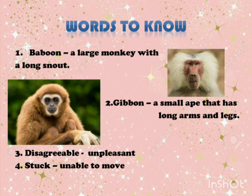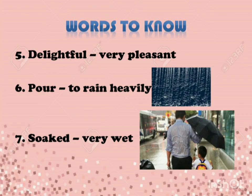The third word is Disagreeable, which means unpleasant or not pleasing in manner. The fourth word is Stuck, meaning unable to move. The fifth word is Delightful — very pleasant. The sixth word is Poured, meaning to rain heavily. And the last, seventh word is Soaked — very wet. Now let's read and understand the story.